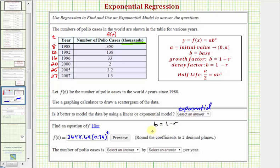where b is 0.74. So if we solve this equation for r, we'll let you do that. You'll get r equals 0.26, or 26 percent. So we can say that the number of polio cases is decreasing by 26 percent per year.